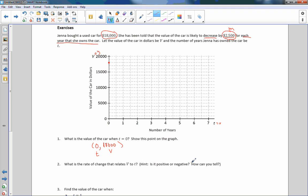What is the rate of change that relates V to T? Hint: Is it positive or negative and how can you tell? It decreases, so it is negative. It's decreasing by 2,500 for each year she owns the car. So it's a negative 2,500. That is the rate of change that relates V to T.